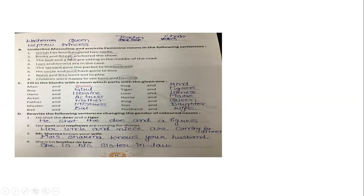So let's see. First, Grish has four hands and two cocks. Hens will be feminine and cocks will be masculine.